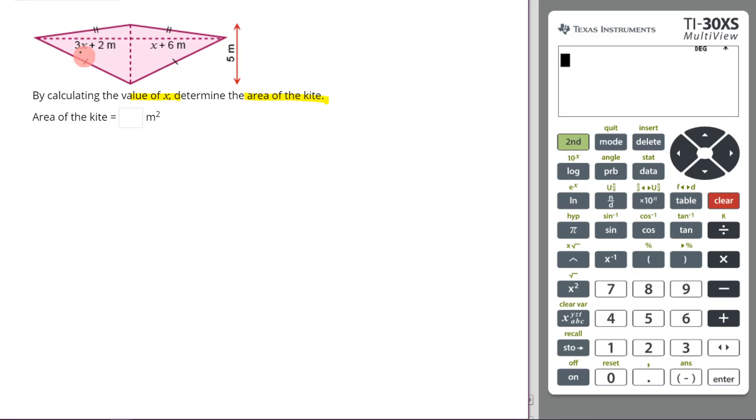As you can see here, I have 3x plus 2, which is this line right here, and then x plus 6, which is this line right here. Now the big thing you need to recognize immediately is that this right here, this length right here, and this length right here, they're equal.